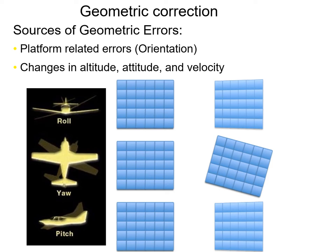For airborne systems, there could be a change in altitude — maybe turbulence — as well as attitude: yaw, where the plane points in a different azimuth; velocity changes where you speed up or slow down; and roll or pitch — changes in the pointing of the platform in three dimensions. A lot of that can be compensated for now, but you still see cases where these effects show up.